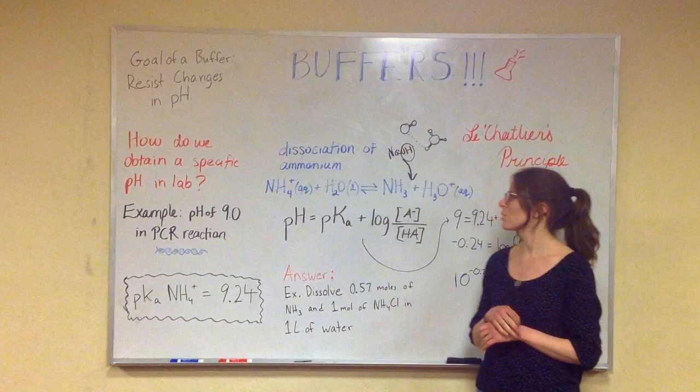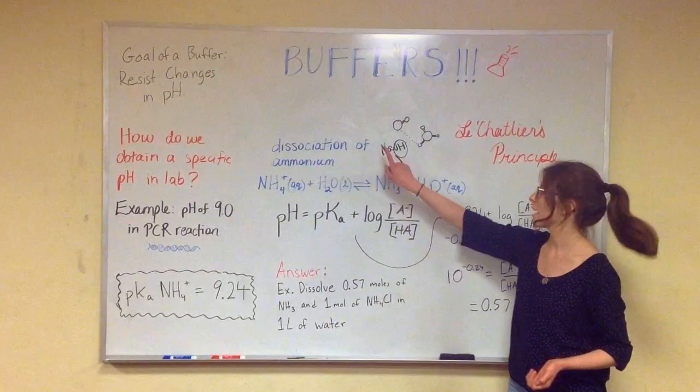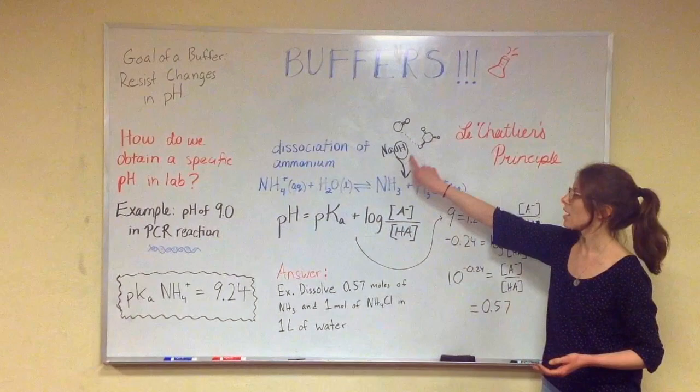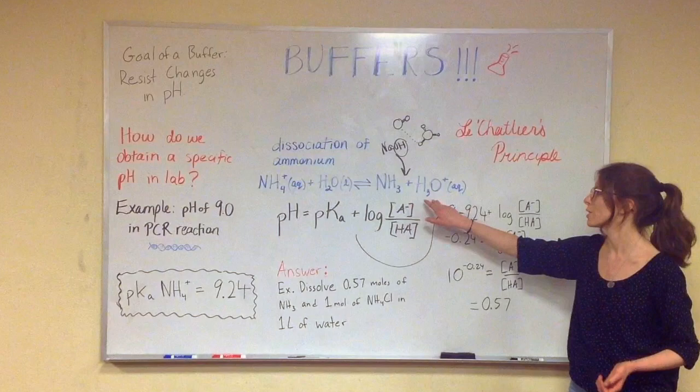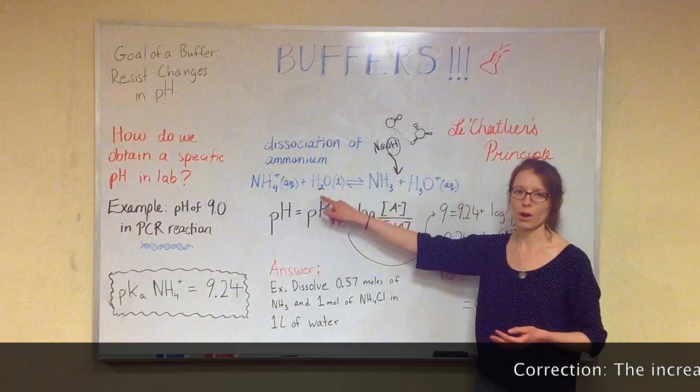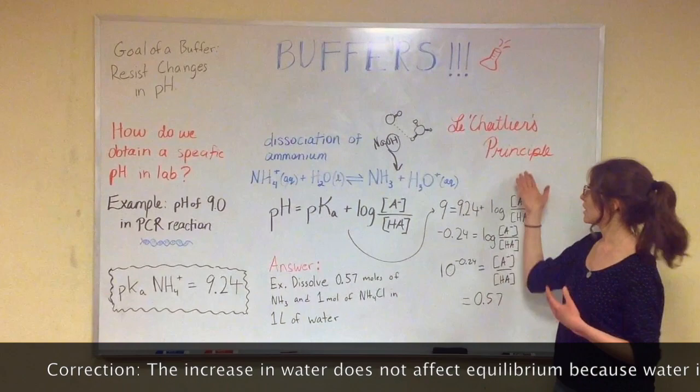So one thing that we could do is add a strong base, NaOH, and what would happen is NaOH would dissociate, and these hydroxide ions would react, would collide, as shown here, with hydronium. And when they collide, they'll form water. So the concentration of water will increase and the concentration of hydronium will decrease.